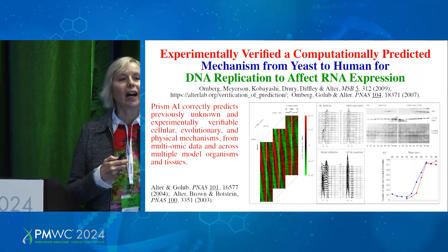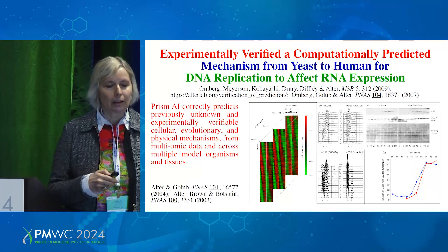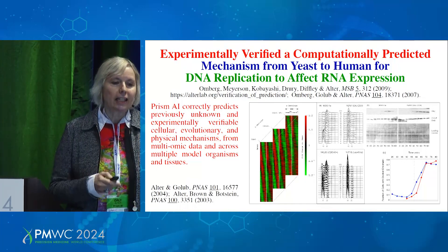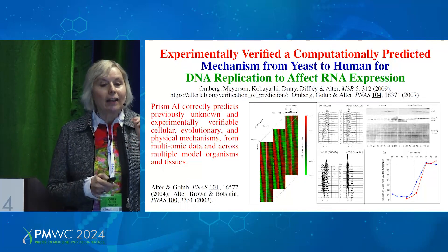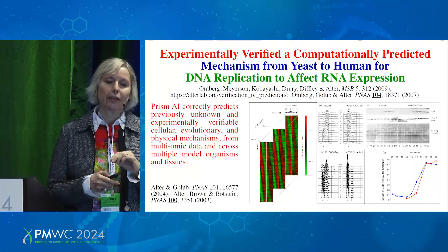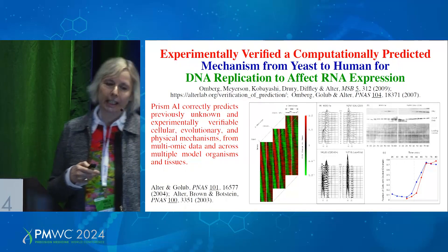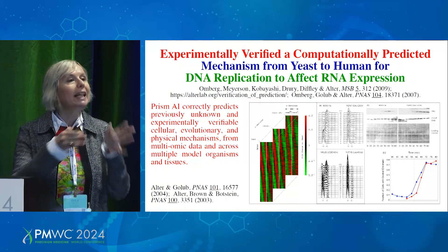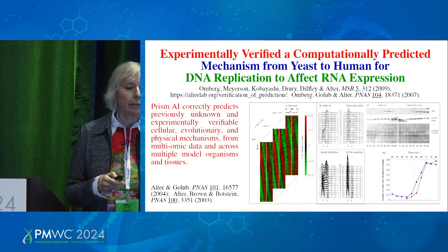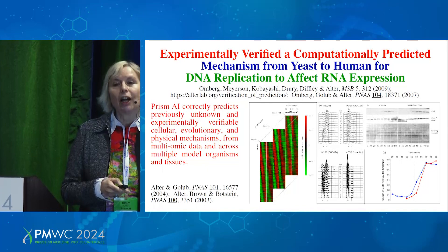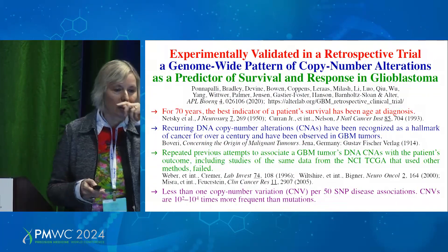In addition to finding biomarkers, we can also find mechanisms. Here's an example of a mechanism that we experimentally verified — DNA replication affecting RNA expression — by going from yeast data to human data, essentially demonstrating that Prism AI can correctly predict previously unknown mechanisms: cellular, evolutionary, as well as physical.